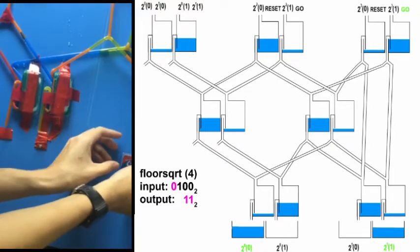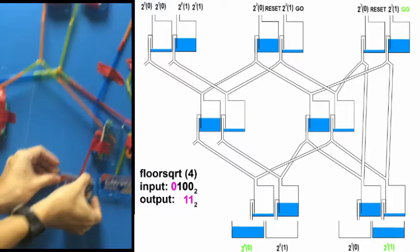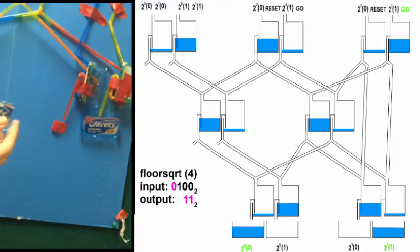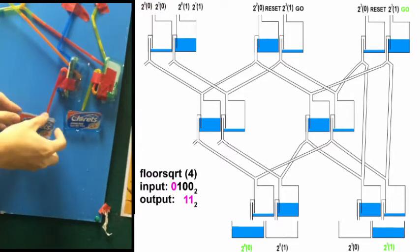The 1's place of the answer is 0. The 2's place of the answer is 1. The answer is 1, 0 in binary, which is 2. The square root of 4 is 2.